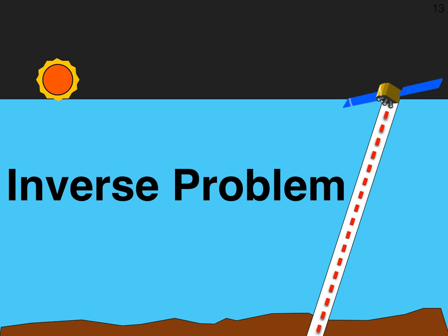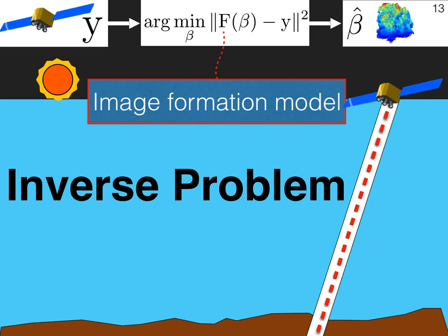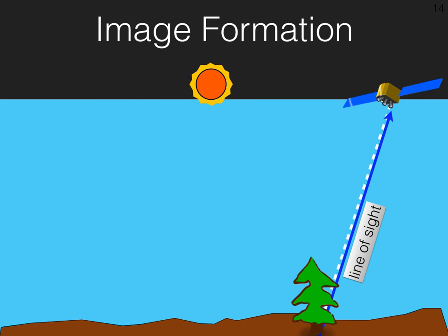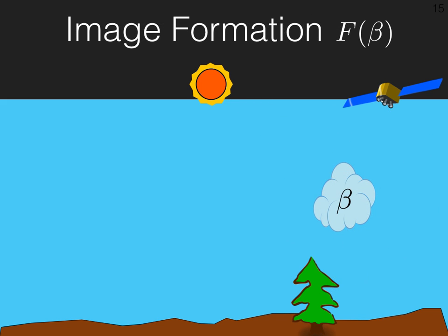Let's formulate the inverse problem. We fit an image formation model to multi-view measurements. I want to talk about the image model. In single scattering, only sunlight scatters into the line of sight. However, in multiple scattering, not only sunlight scatters, but rather light traveling around in the 3D domain. So for a given atmosphere beta, the image model F forms the images as viewed by the imaging system — in this case, the satellite.